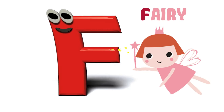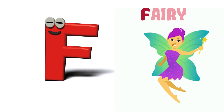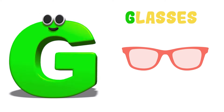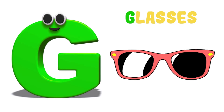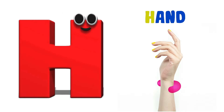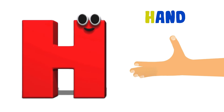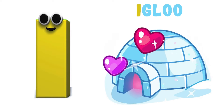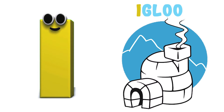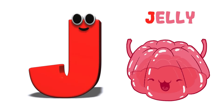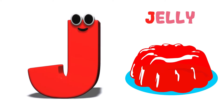F is for Fairy. F-Fairy, Fairy. G is for Glasses. G-Glasses, G-Glasses. H is for Hand. H-Hand, H-Hand. I is for Igloo. I-Igloo, I-Igloo. J is for Jelly. J-Jelly, J-Jelly.